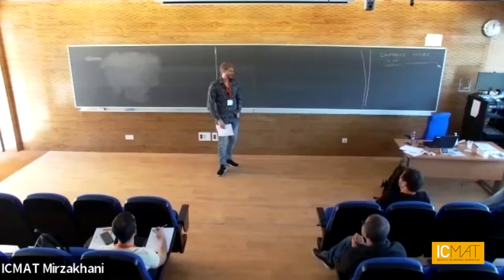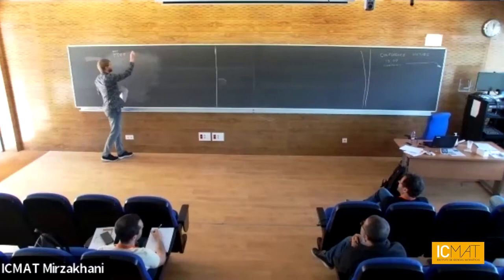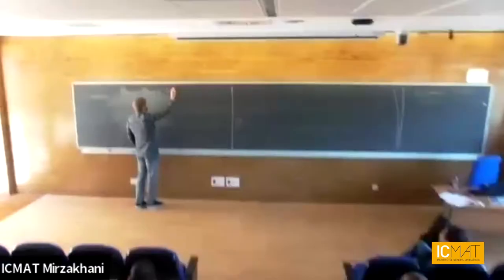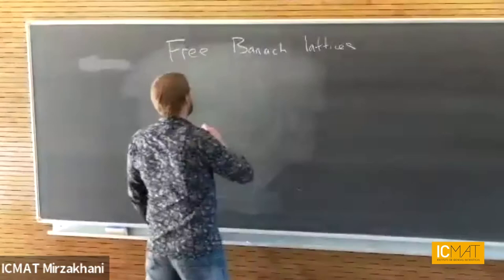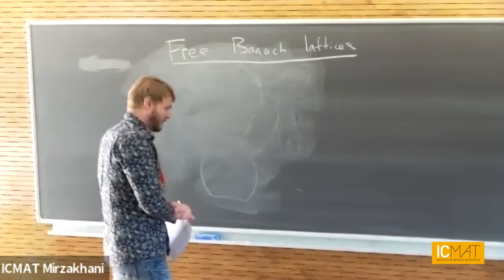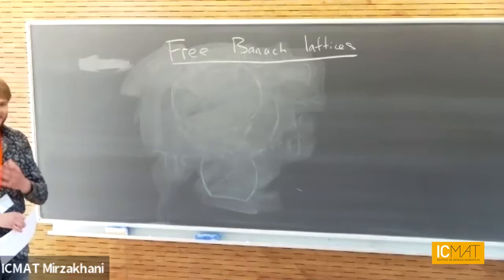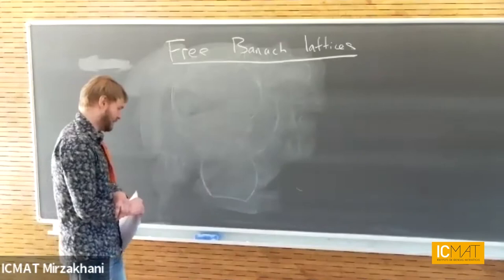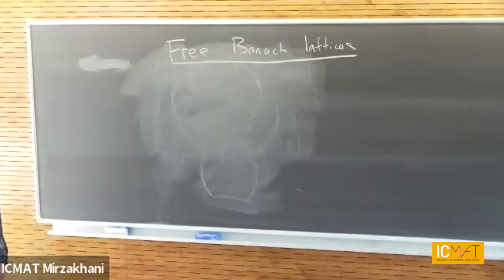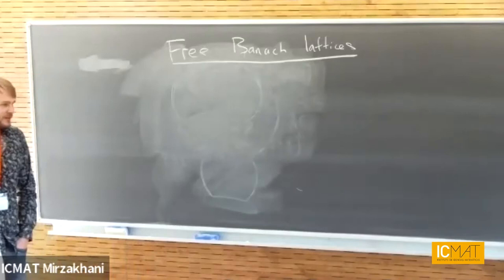Thank you for the introduction and to the organizers for the chance to speak here. I'll talk about three biases — this is part of joint work with Timor, Pedro, and Vladimir. Timor gave a very nice overview of the subject. I actually want to go back to the beginning and give some elementary intuition about where the form of the free monoclonus comes from, why the norm has a certain structure, why these summing norms come into play, and give some general principles that guided our analysis.